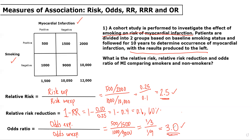In conclusion, smokers had two and a half times the risk of MI compared to non-smokers, three times the odds of MI compared to non-smokers, and non-smokers had a 60% lower risk of MI compared to smokers. If you have trouble with this question, I recommend re-watching the associated video. As always, please like, comment, subscribe, and good luck.